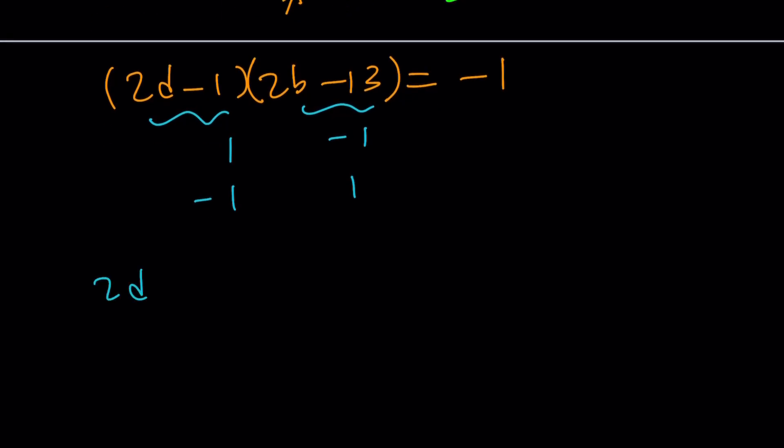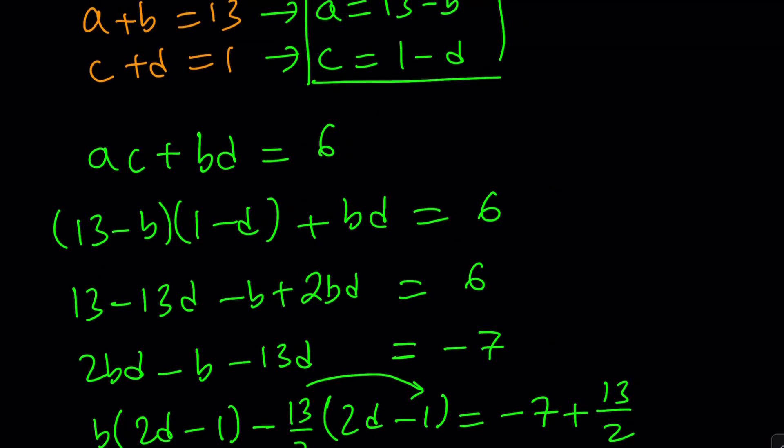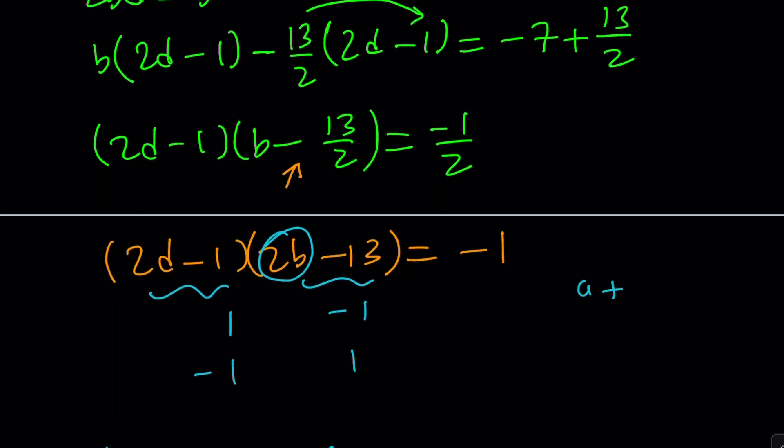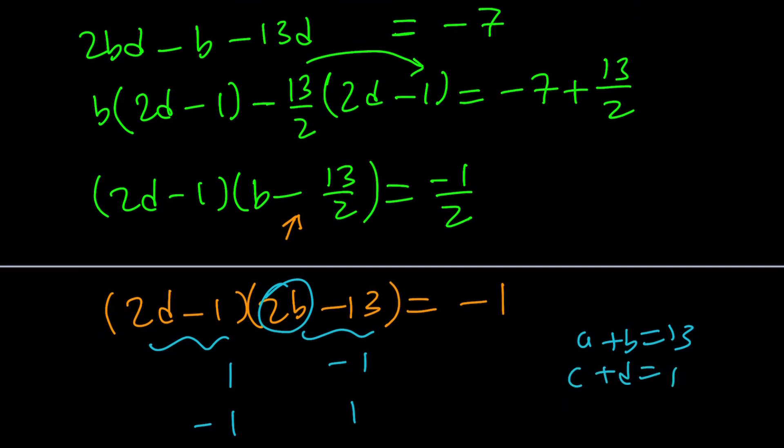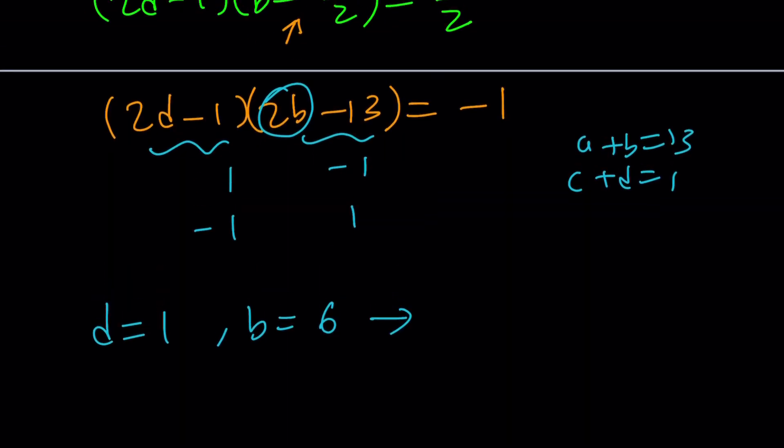If 2D - 1 = 1, I guess we could do this mentally, can't we? It's fairly simple. If 2D - 1 = 1, then that means D = 1. And the 2B - 13 = -1 means 2B = 12. And B = 6. 2B or not 2B. Yeah, I can say that, right? So, this implies something. If D is 1, we know that A + B = 13. We got to write this down here. Copy. And C + D = 1. Great.